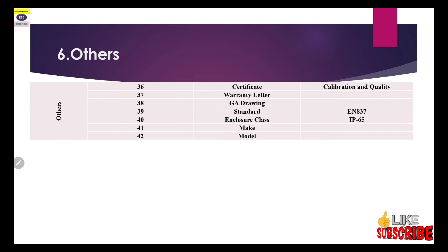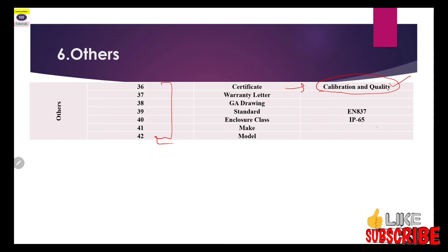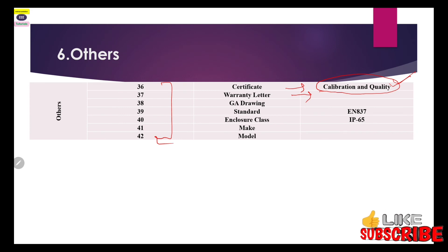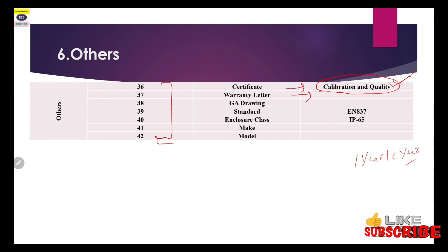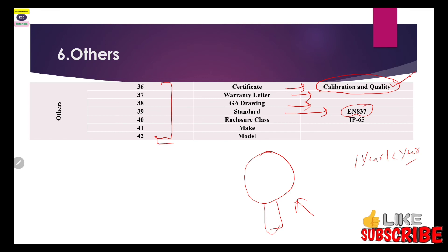Certificates are required whenever you purchase a pressure gauge. A calibration certificate done at the factory is required. A quality certificate for all materials used in manufacturing the gauge is also required. You can also ask the vendor for a warranty certificate, which may be for one, two, or three years. A GA drawing showing the full construction, materials, and bill of materials should also be included.